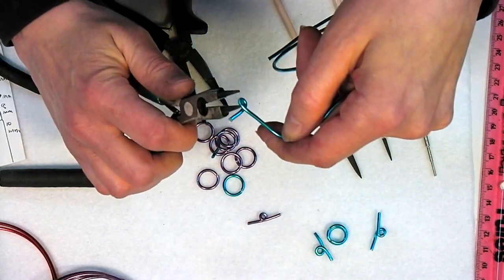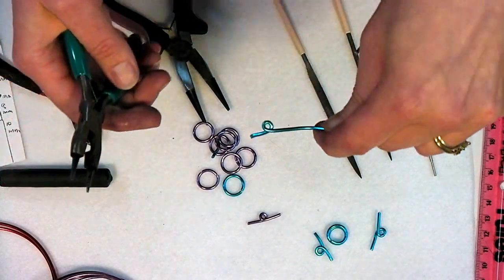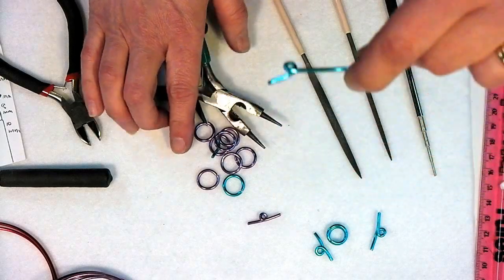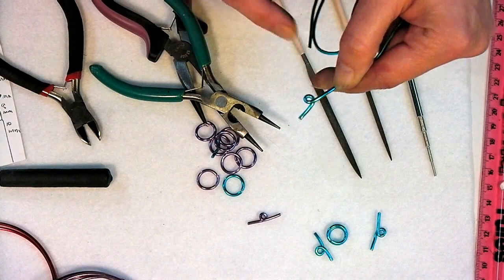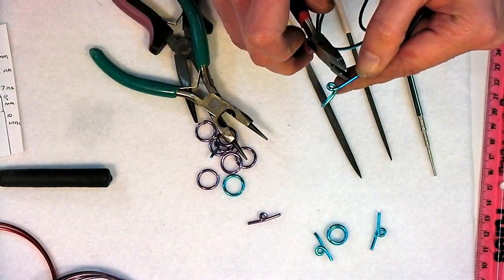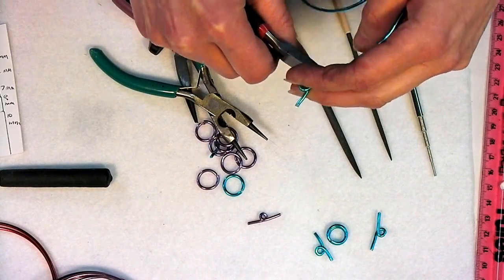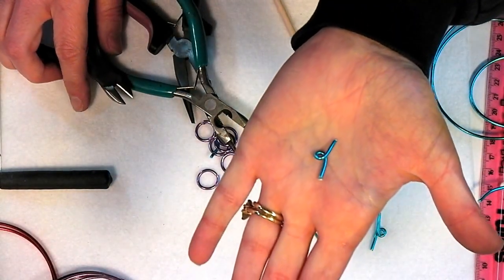Then you're going to reinsert your pliers and pull it the rest of the way so you end up with kind of a loop with a flat top. You see that? Let me bring it up a little bit closer. Alright, then you're going to make a cut about a half an inch away from that loop just using your diagonal side plier cutters or flush cutters or your three-in-one tool. Then you have a little toggle that looks like that.